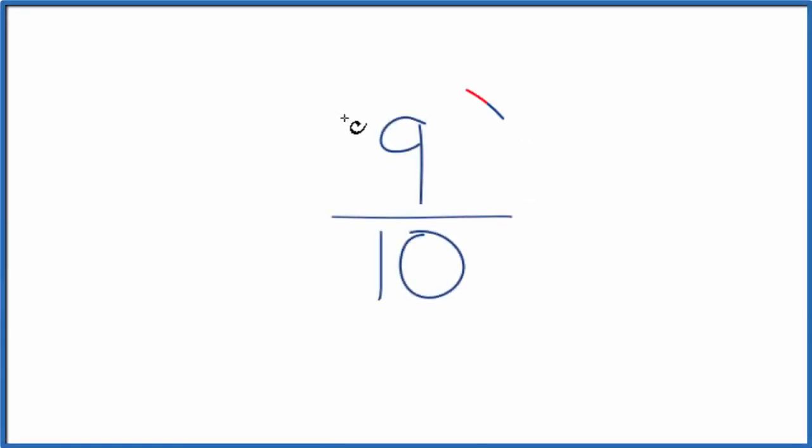If you need to find three equivalent fractions for 9 tenths, here's how we could do that. We're looking for other fractions that are equal. They have the same decimal value as 9 divided by 10, just that they have a different numerator and denominator.